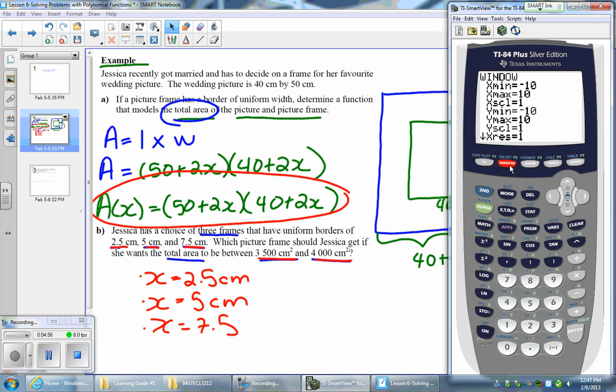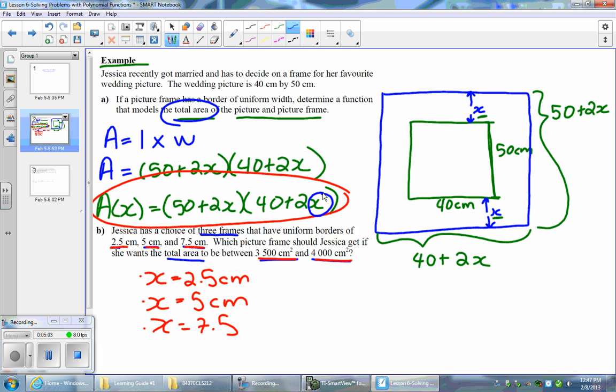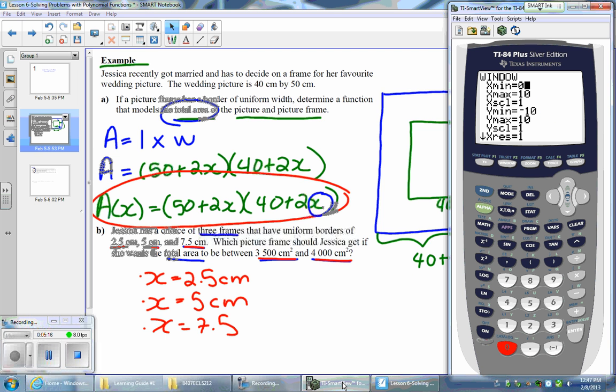I got a window here prepared for you. We're going to let x min be zero. Just be careful here, the reason I'm using zero as my x min is that x represents the width of the border, and there's no such thing as a negative width. So that's why I'm restricting my x min values to zero. My x max we'll leave at 10 and then my y min we're going to keep it at zero. We're going to go with a y max of 5,000.